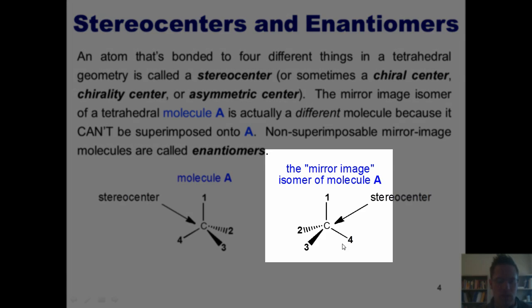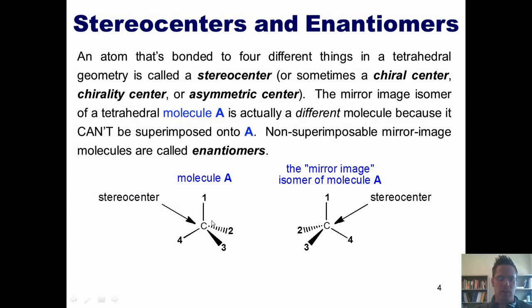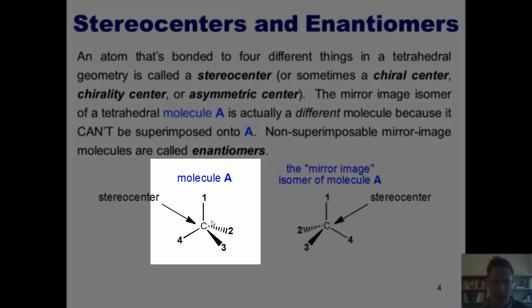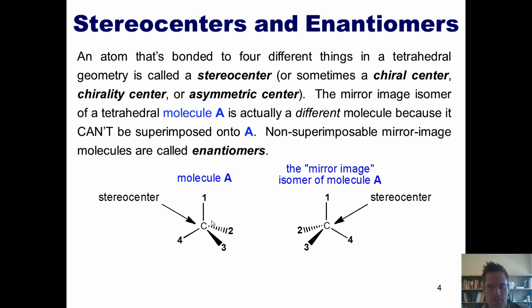Now the mirror image isomer of molecule A is actually different, because it can't be superimposed onto molecule A. Now you might not believe me here. I think that the clearest way for you to see it is if you were to actually build a three-dimensional model using a molecular model kit. For students taking this class from me, I let you bring model kits into the exams and use them on your problem sets and homework. If you're a really cheap person like me, you can just use marshmallows and toothpicks to assemble molecular models as well. The beautiful thing about it is after you're done, you can eat them.